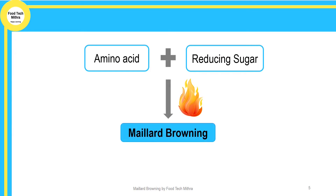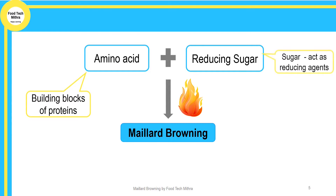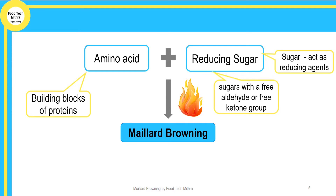In simpler terms, Maillard browning is the reaction between amino acids and reducing sugar in the presence of heat. Amino acids are the building blocks of proteins. Reducing sugars contain a free aldehyde or ketone group and act as reducing agents — they reduce other components while themselves getting oxidized. Examples of reducing sugars include glucose, lactose, fructose, and galactose. When these two components react together at high temperature — in the range of 140 to 165 degrees Celsius — Maillard browning happens.